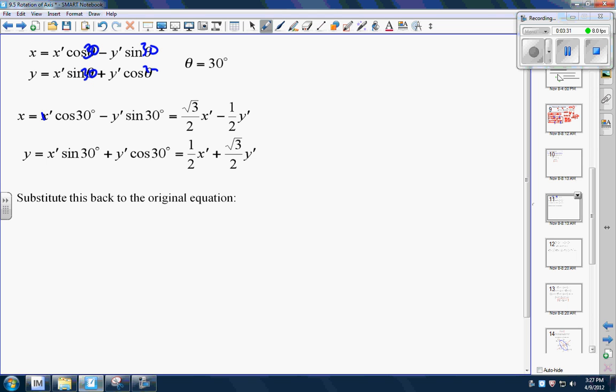Now, we can say an x, let's get rid of this because we've already used it. An x is √3 over 2 x' minus 1/2 y'. We can say a y is 1/2 x' plus √3 over 2 y'. Now the trick is to take these guys and go plug them back into the original equation.